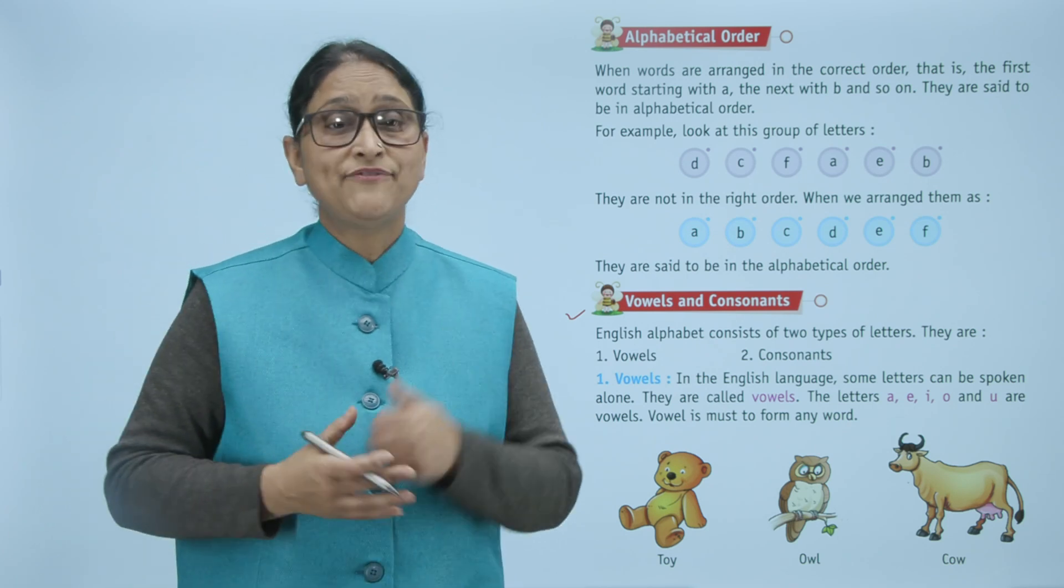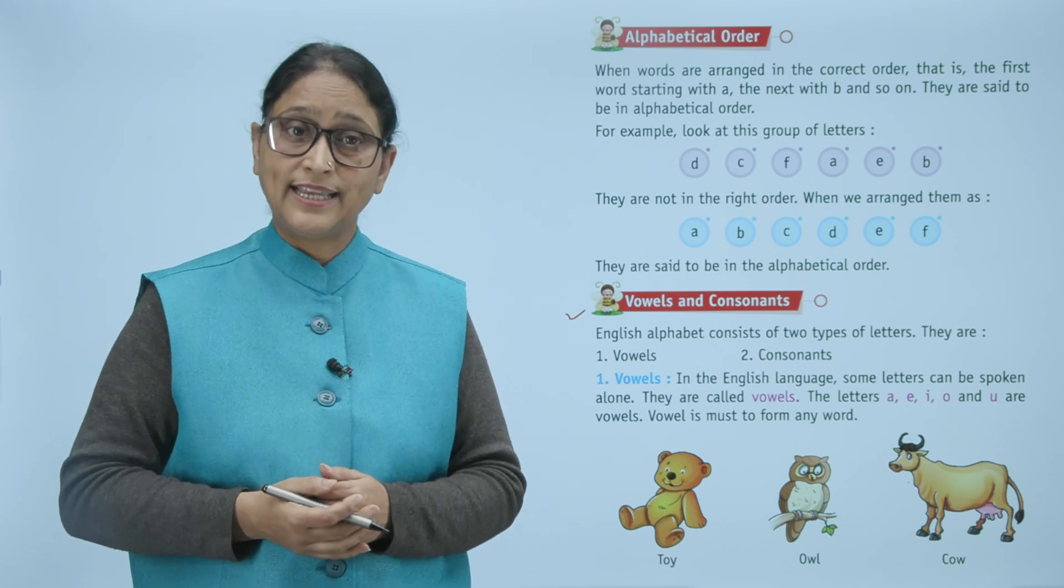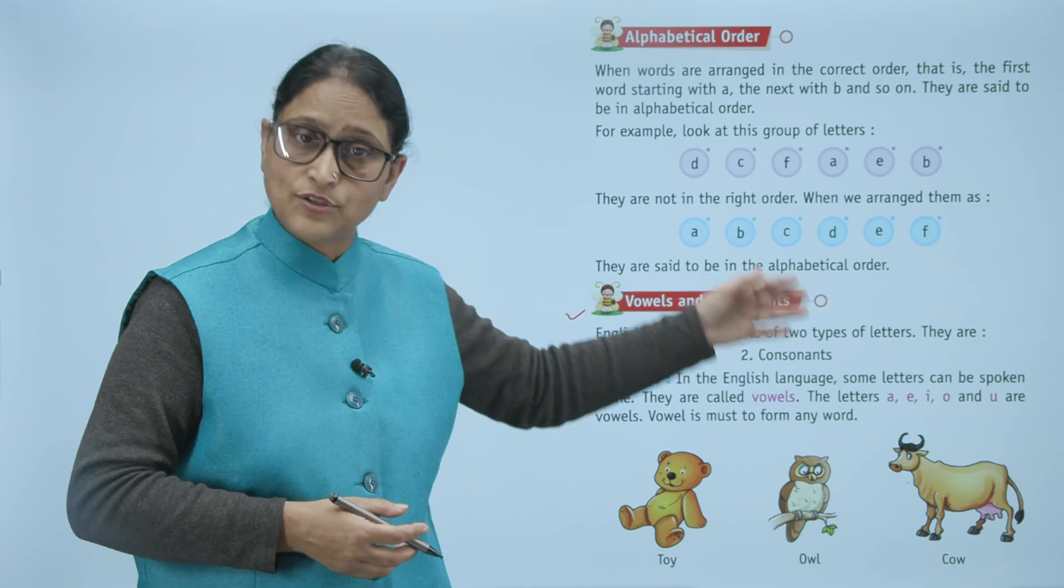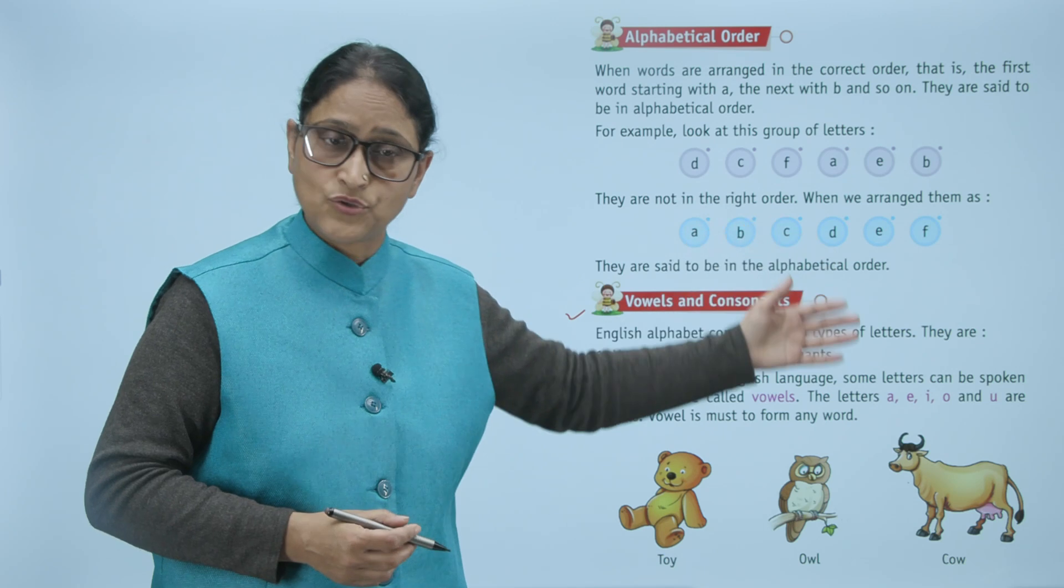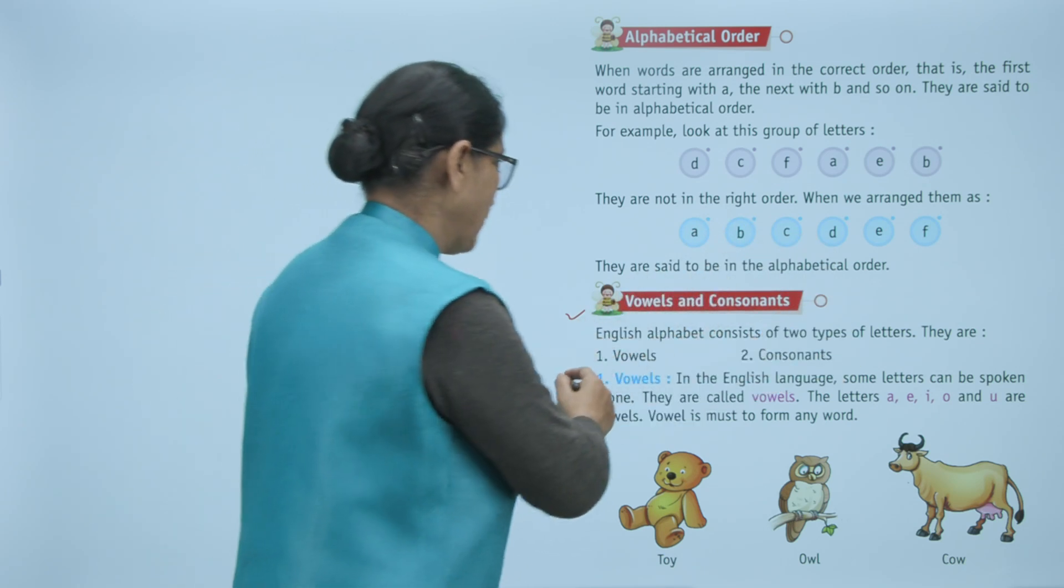Now vowels and consonants. The English alphabet consists of two types of letters. They are vowels and consonants. Number one is vowels.